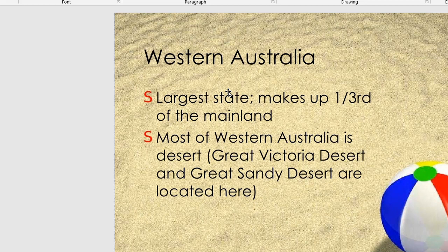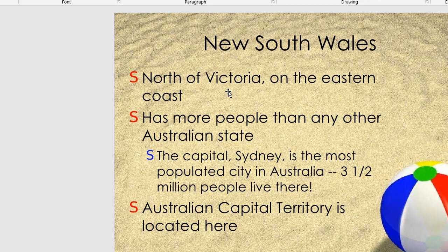This is New South Wales, located north of Victoria on the eastern coast. It has more people than any other Australian state. The capital, Sydney, is the most populated city in Australia.